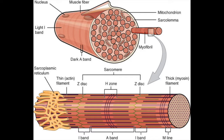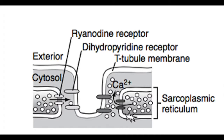On the t-tubules we have receptors called dihydropyridine receptors. Inside the cell we have something called the sarcoplasmic reticulum, which is an intracellular calcium storage space. On the surface of the sarcoplasmic reticulum we have a different type of channel called a ryanodine receptor. Both the dihydropyridine receptor and the ryanodine receptor are calcium channels, and they are actually linked to each other.